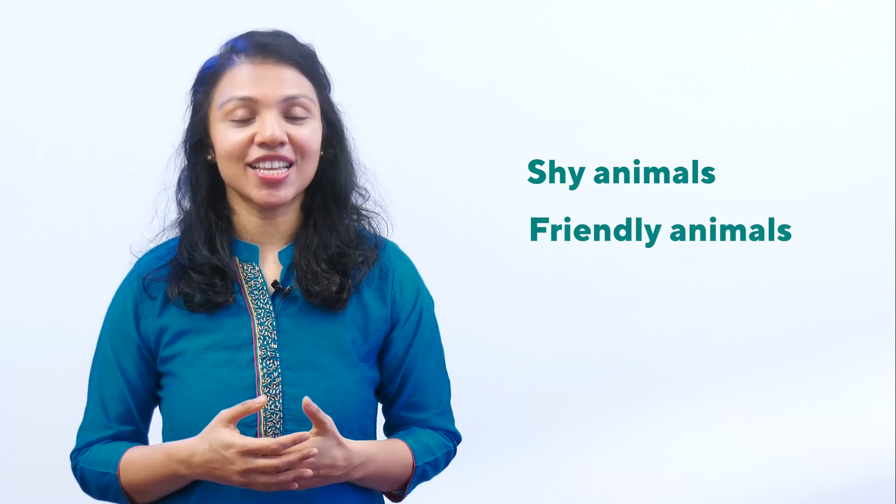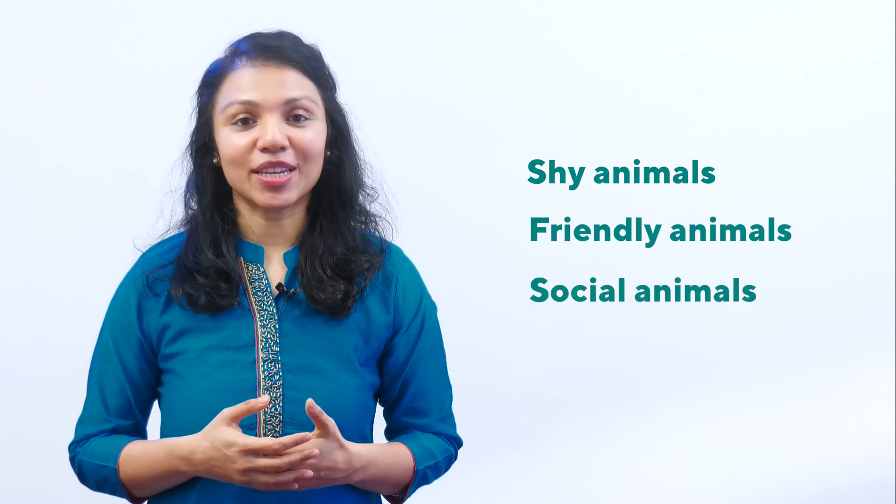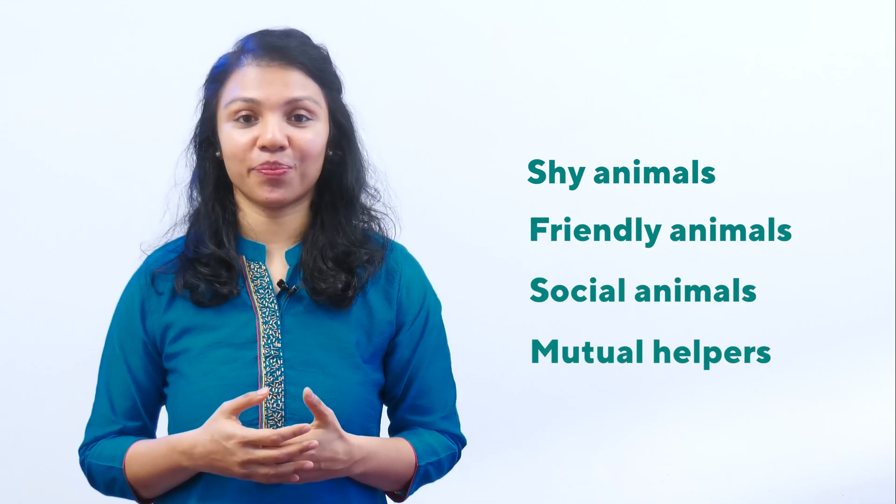Based on the general behavior of animals, there can be four different types: shy animals, friendly animals, social animals, and mutual helpers. Let's go through each of them. First, shy animals — these are animals that are too shy or scared to come near us.